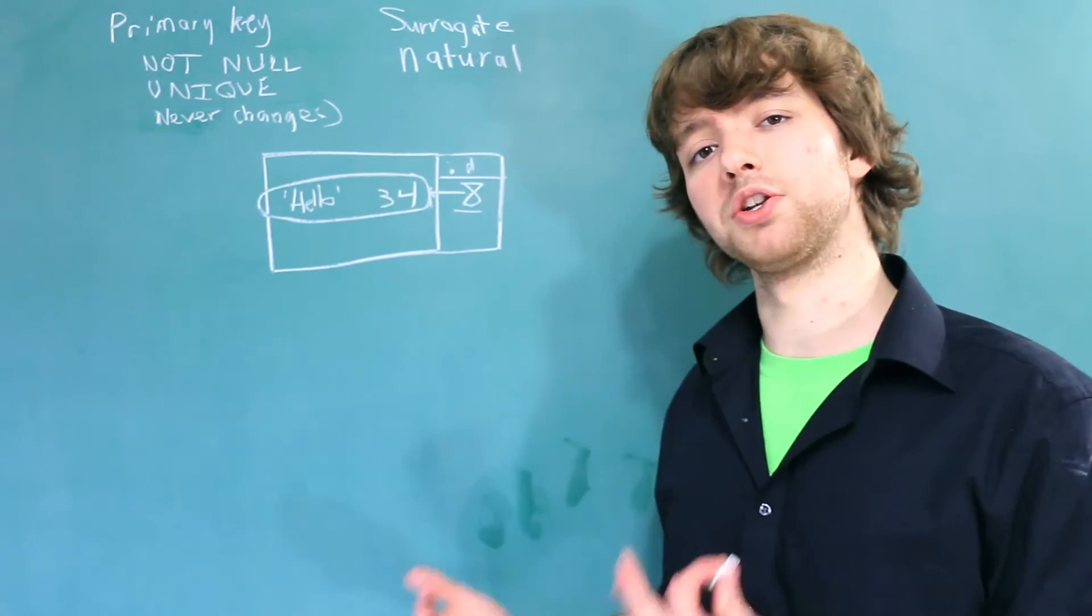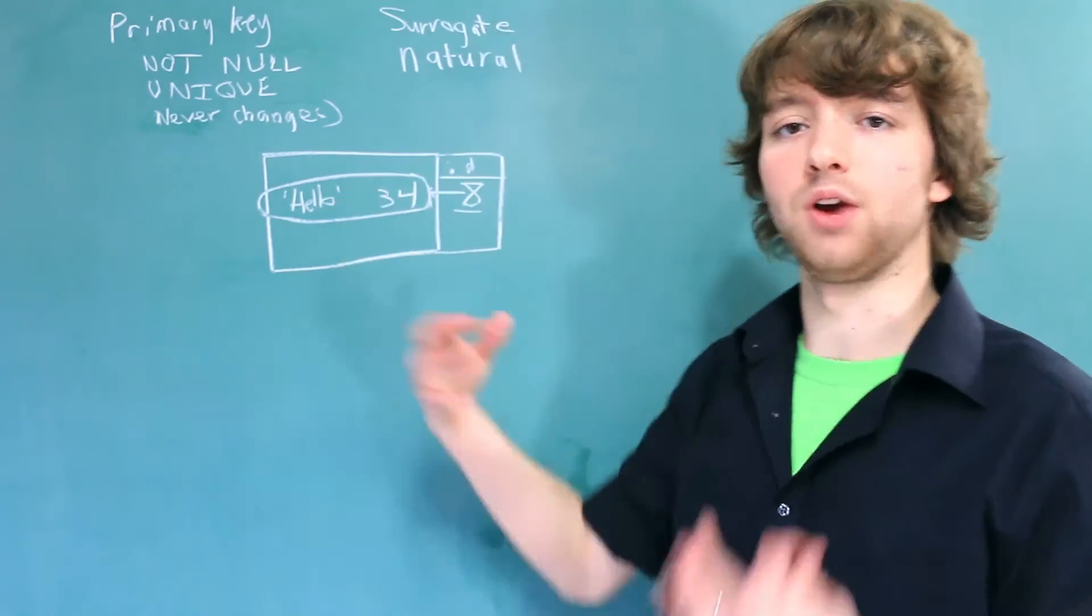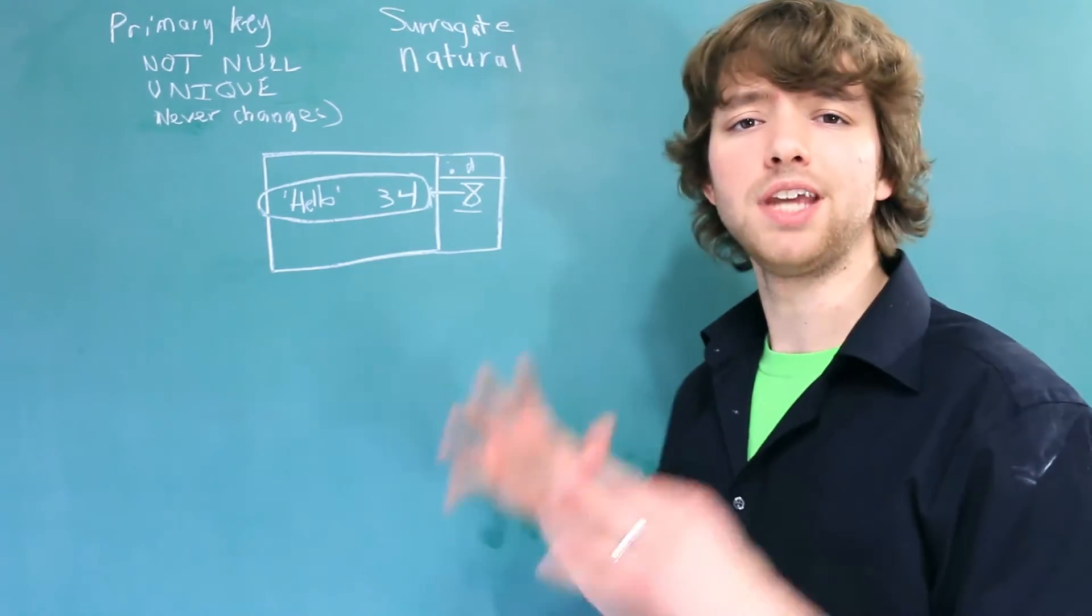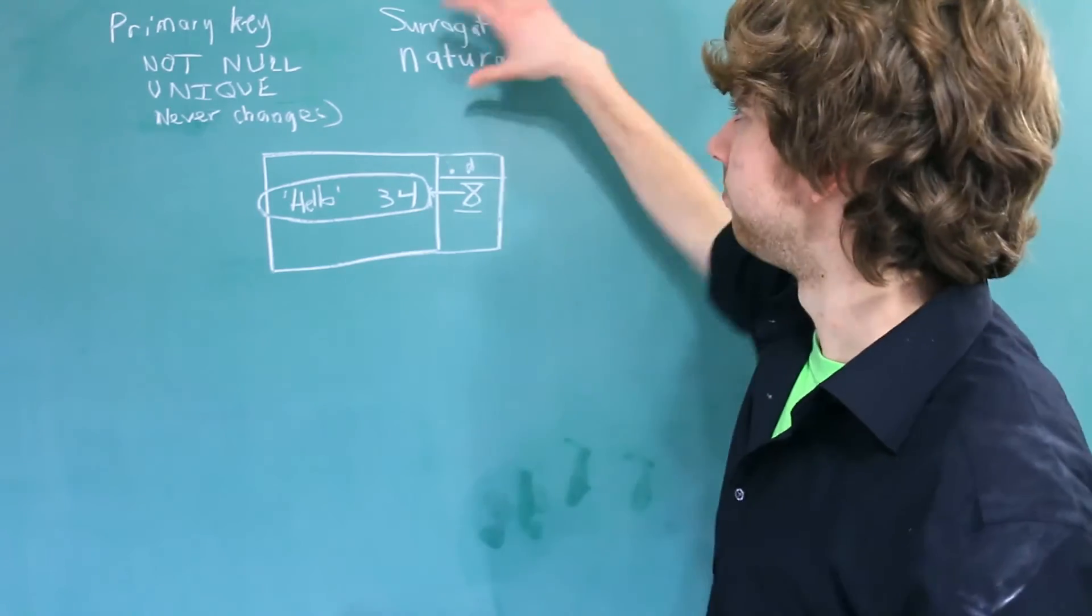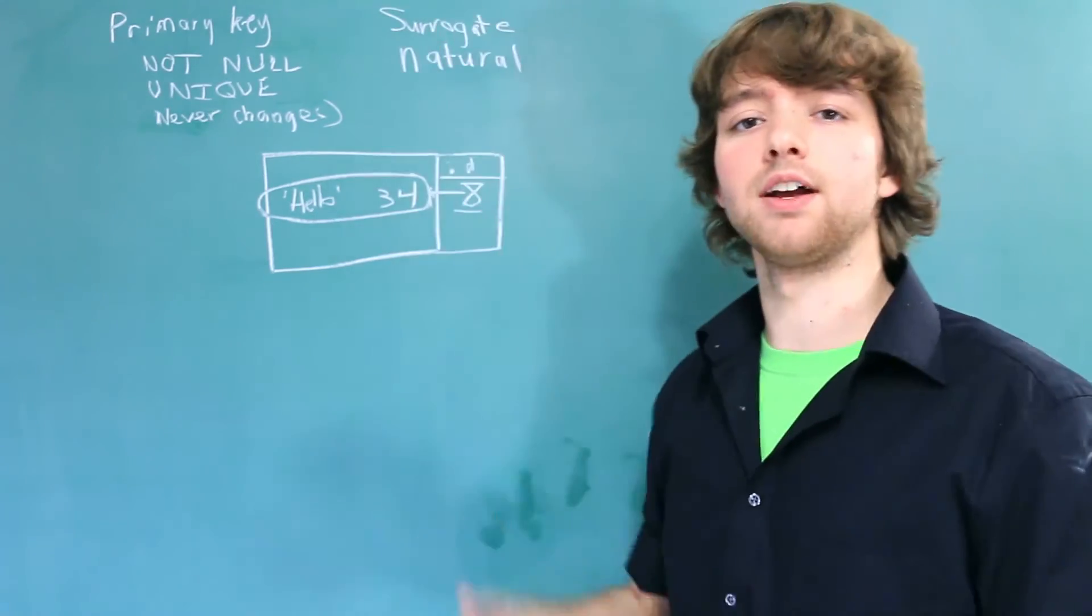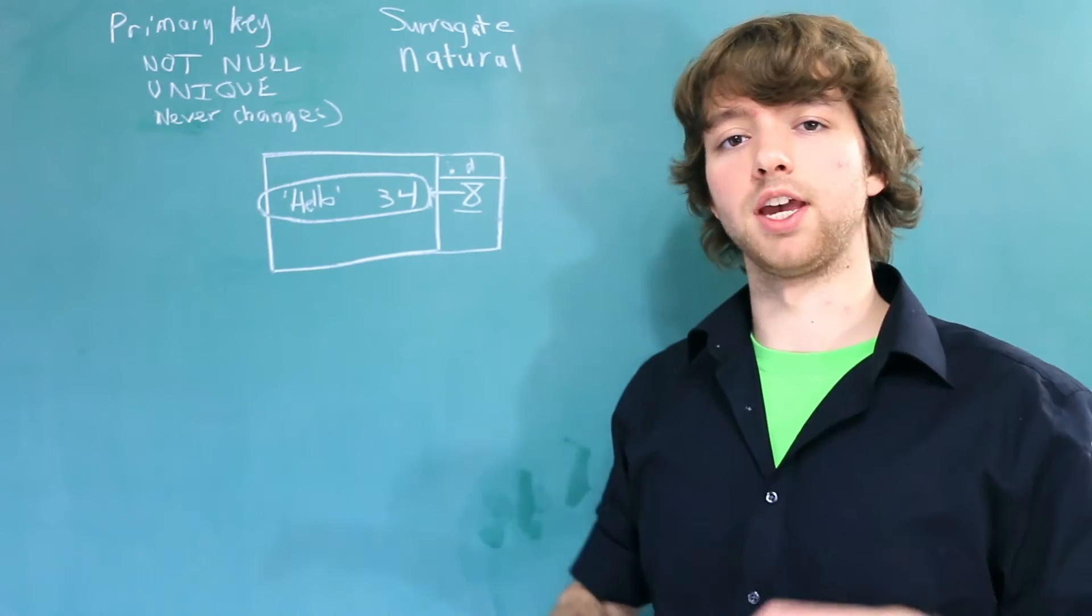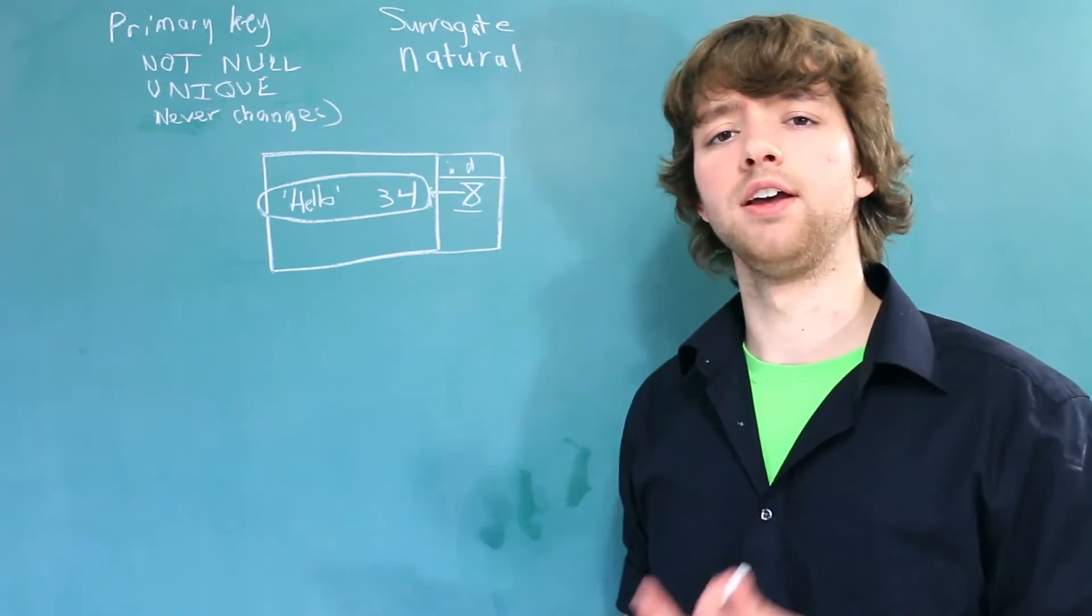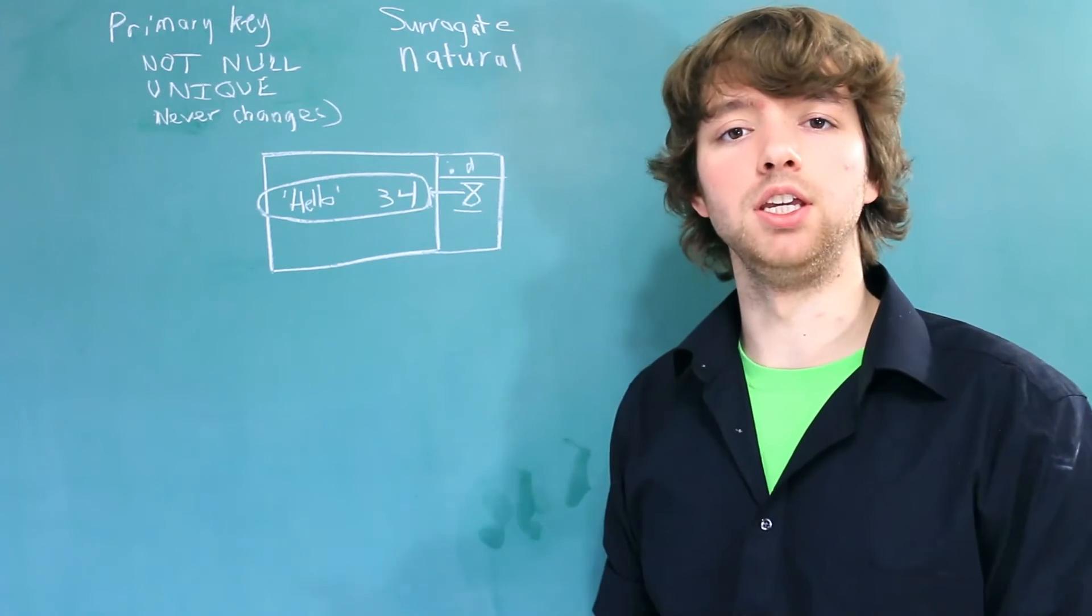And it's also important to understand that these are categories that we use to make it easier to discuss primary keys, but the database does not know the difference between these two. It's not like you create a primary key and say this is a surrogate one or this one's a natural key. You don't do that.